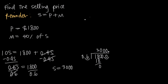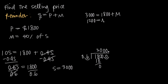Since we know that S is equal to three thousand, we can plug this back into our original formula. Three thousand for selling price equals the purchase price of eighteen hundred plus the markup. If we subtract eighteen hundred from both sides, we get twelve hundred is equal to M. So we know that the markup was twelve hundred dollars.